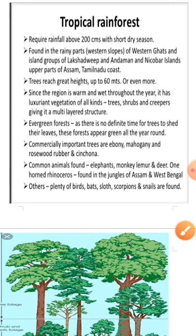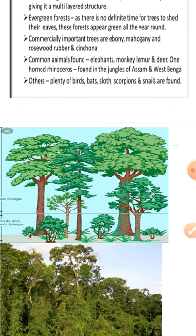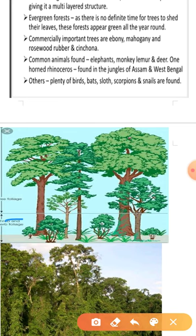Since the region is warm and wet throughout the year, it has luxuriant vegetation of all kinds. As explained, all kinds of vegetation like trees, shrubs, herbs, creepers, and climbers give a multi-layer structure. The multi-layer structure means: in the first layer there are shrubs, in the second layer middle-height trees, and in the third layer trees above 60 meters.